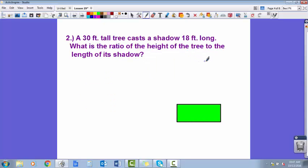Number two, we have another ratio I would like you to write. A 30-foot tall tree casts a shadow 18 feet long. What is the ratio of the height of the tree to the length of its shadow? Again, you always want to watch the order. They ask for the ratio of the height to the length of the shadow. Make sure the height is your first number and the length of its shadow is second.